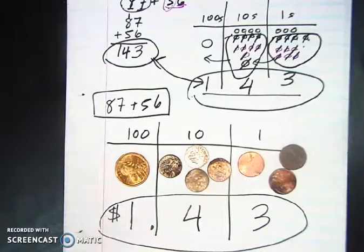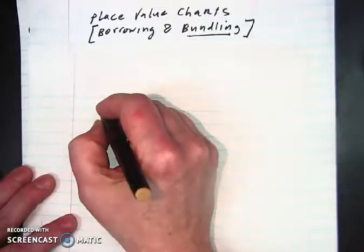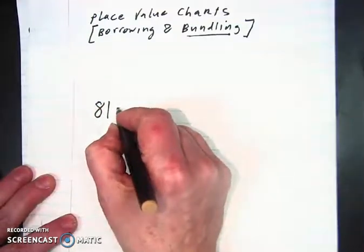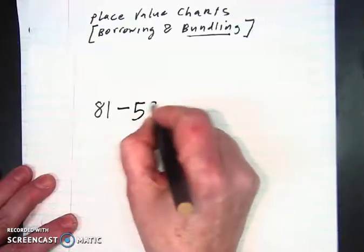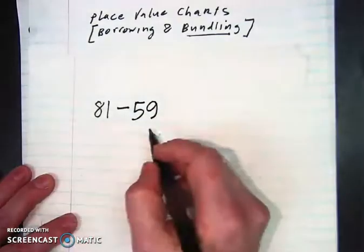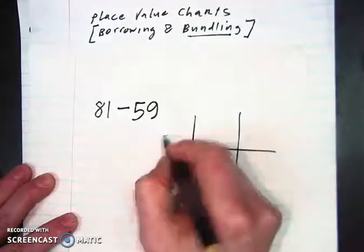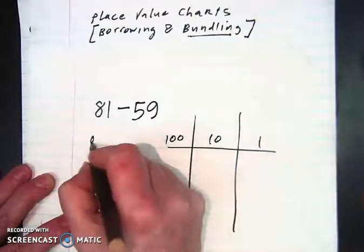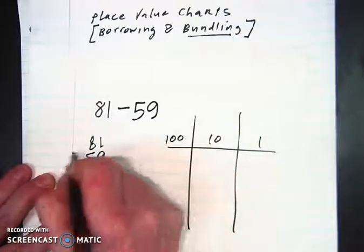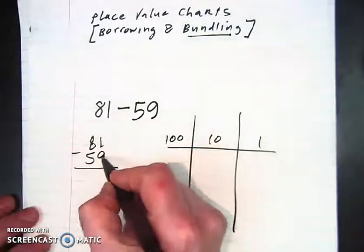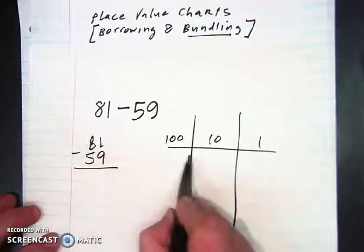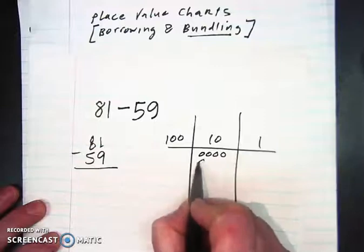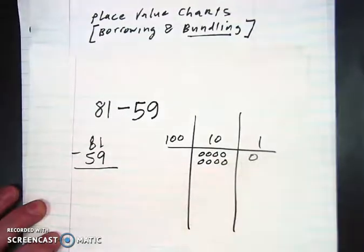Next, we're going to do a quick example of borrowing. In order to borrow, I'm going to take a similar problem. I'm going to say 81 minus 59, because then this will put us in the position where we have to borrow. So again, here's our placement chart: 100, 10s, 1s. We're going to set the problem up vertically. And of course, you can't take 9 from 1. So if we were to input our values into the chart, it would be 1, 2, 3, 4, 5, 6, 7, 8 and 1. There's 81.